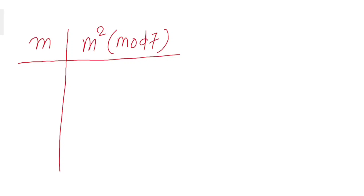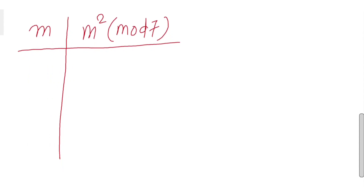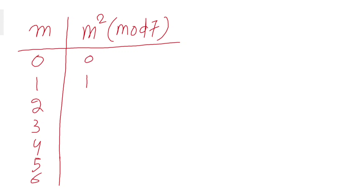There are seven possibilities: m can be 0, 1, 2, 3, 4, 5, or 6. So: 0 squared mod 7 is 0; 1 squared mod 7 is 1; 2 squared is 4, mod 7 is 4; 3 squared is 9, mod 7 is 2; 4 squared is 16, mod 7 is 2; 5 squared is 25, mod 7 is 4; and 6 squared is 36, mod 7 is 1.